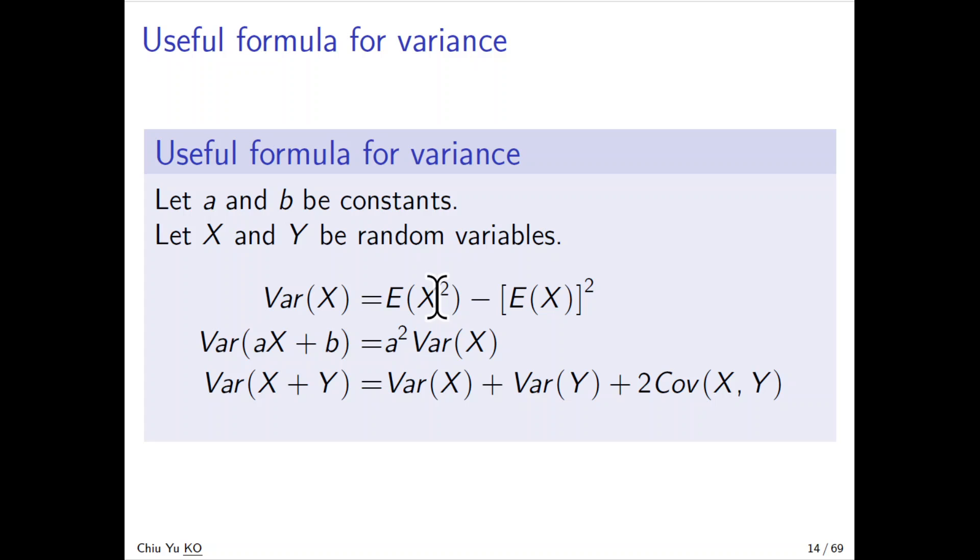First is the expected value of the squared random variable, and then minus the square of the expectation. This is a very useful way to calculate variance, because sometimes it's very difficult to calculate directly. This is a very nice formula.